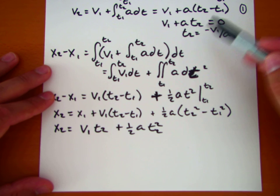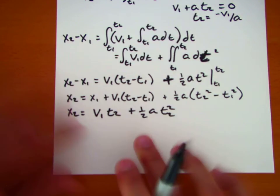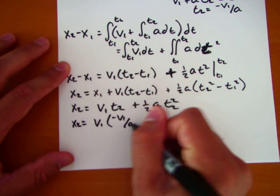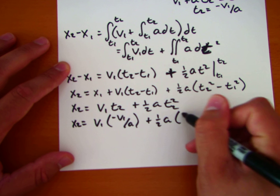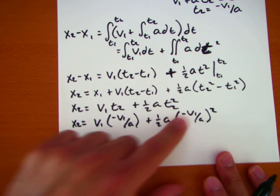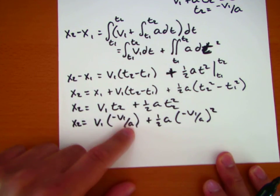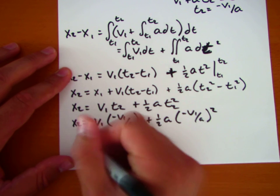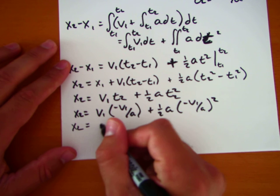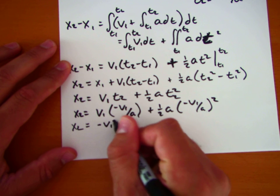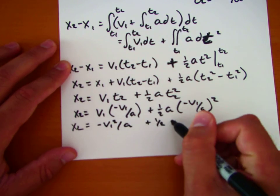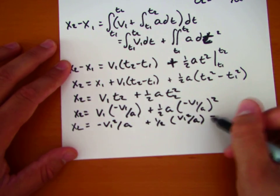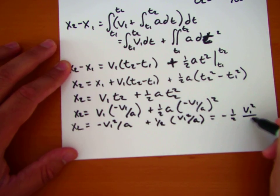Now remember from equation 1 we solved for t2. t2 is equal to negative v1 over a. So if we make that substitution, we're going to get x2 is equal to v1 times negative v1 over a. And this is plus 1 half a negative v1 over a squared. So this becomes negative v1 squared over a, and this becomes v1 squared over a squared times a times 1 half. So this simplifies and is just equal to negative 1 half v1 squared over a.